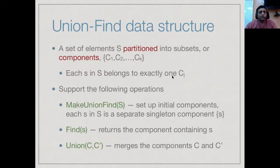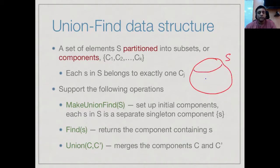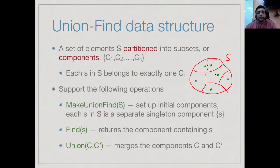Formally, the problem we are trying to solve is to maintain a partition of a set and update this partition. By a partition we mean that we have a set S broken up into disjoint subsets — these subsets don't overlap and every element belongs to exactly one of them. We call these subsets components. In Kruskal's algorithm and other applications, we often start with a partition in which every element is on its own.